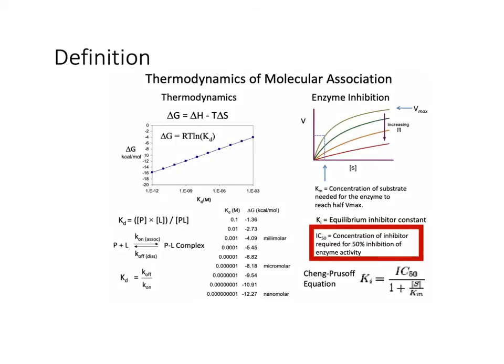So first let's start with the definition. You may remember this slide because it's from your first PowerPoint, and in the red box you can see that IC50 describes the concentration of inhibitor required for an enzyme's activity to be diminished by half. So essentially, a smaller IC50 means that you have less of a drug to inhibit the enzyme.